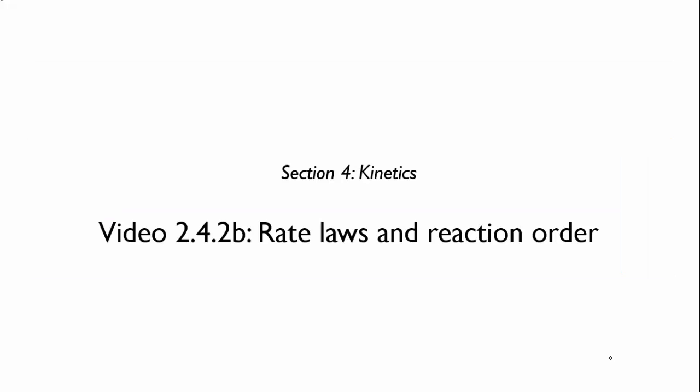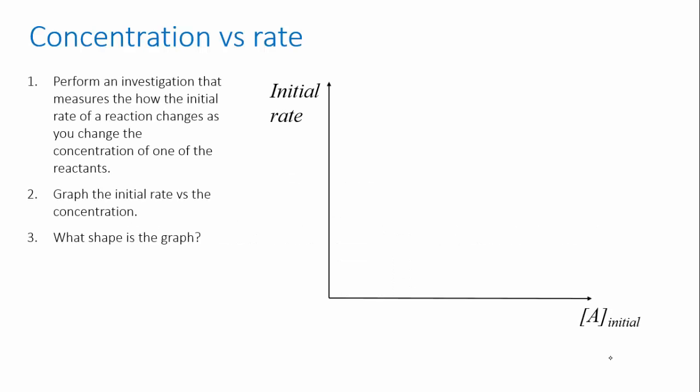In the last video we talked about expressing rates in terms of how fast a reactant disappears or a product is produced. Here we're going to go further and produce an equation that predicts what the rate of reaction will be for a given reactant concentration. We're going to use experimental data to do this. This equation is called a rate law. There's no way of determining a rate law just by looking at a chemical equation — it has to be experimentally determined by studying how the rate changes as you change the concentration of a reactant.